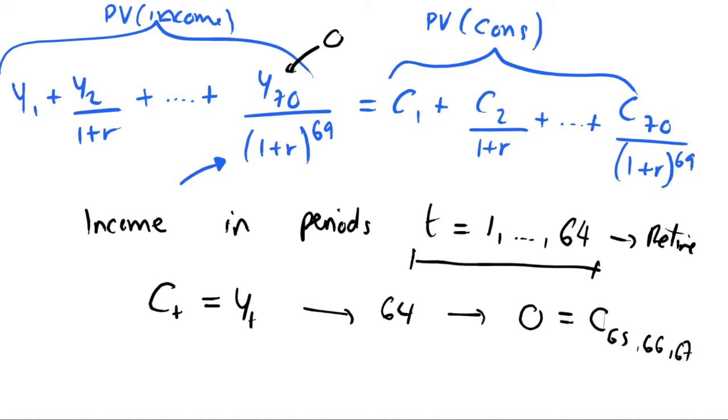We can't consume anything in those periods. So obviously we don't want to consume our income, what we actually do is consumption smoothing.